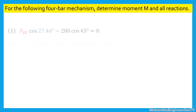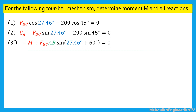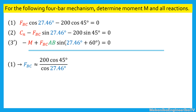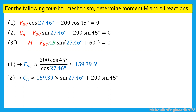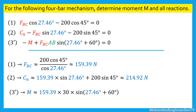We have the following three equations, considering that phi is equal to 27.46 degrees. Solving equation 1 gives FBC equal to 200 times cosine 45 degrees divided by cosine 27.46 degrees, or 159.39 newtons. Then solving equation 2 gives CN equal to 159.39 times sine 27.46 degrees plus 200 times sine 45 degrees, or 214.92 newtons. Finally, solving equation 3 gives moment M equal to 159.39 times 30 times sine of (27.46 degrees plus 60 degrees), or 4777 newton centimeters.